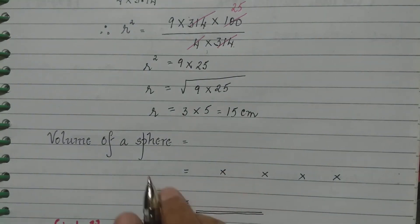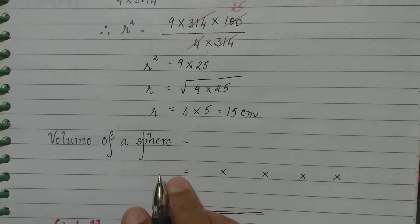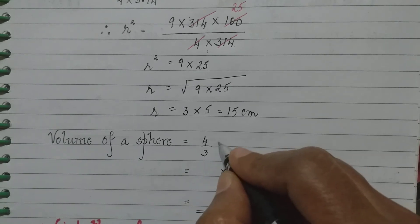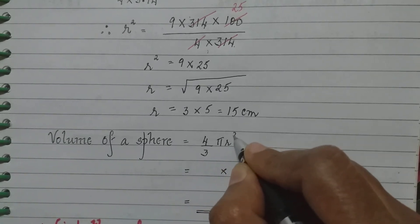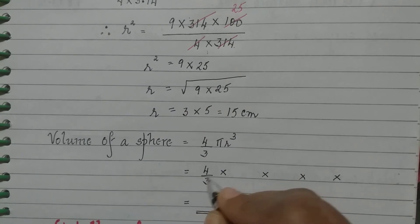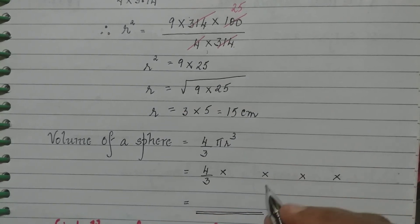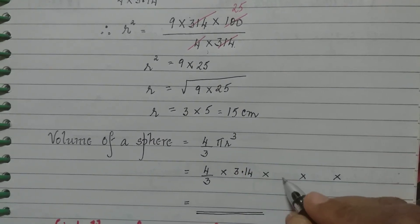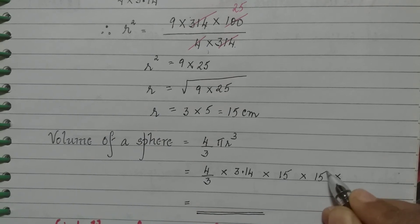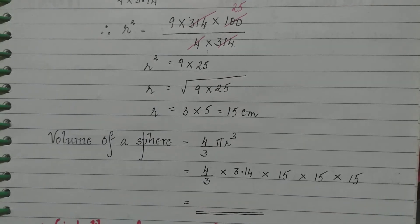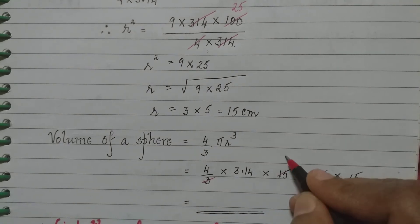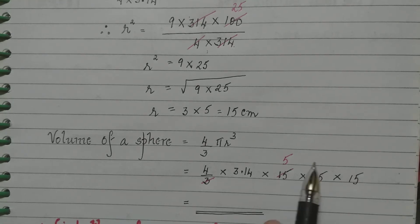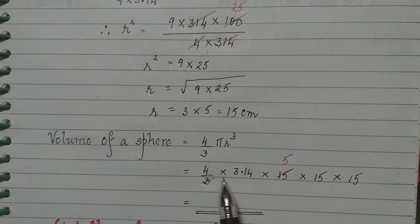Now coming to the volume of a sphere. The formula for volume of a sphere is 4/3 × π × r³. We took π as 3.14, so we write 3.14. r we got as 15, so we write 15 into 15 into 15. Now simplifying, 3 goes into 15 five times.